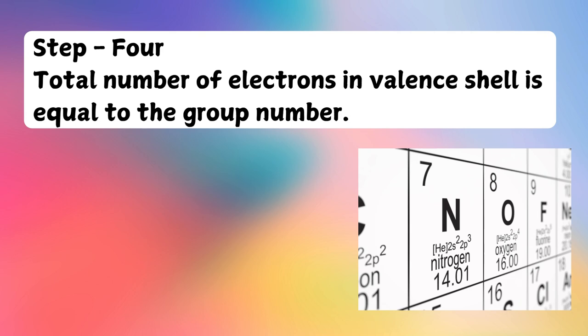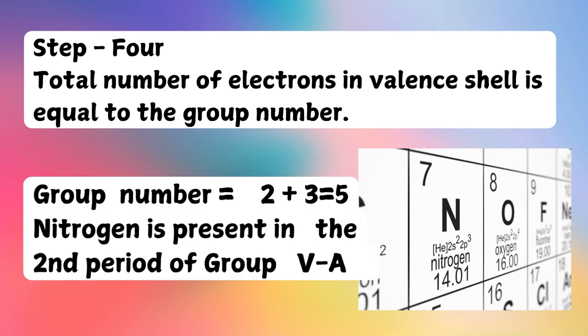Step number 4: The total number of electrons in the valence shell is equal to the group number. Group number equals 2 plus 3 equals 5. Nitrogen is present in the second period of Group 5A.